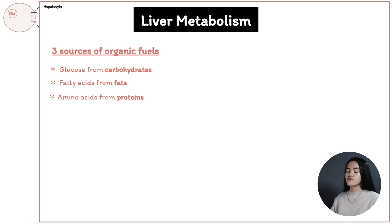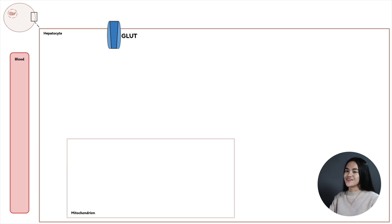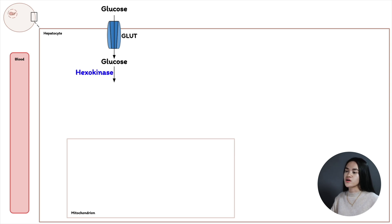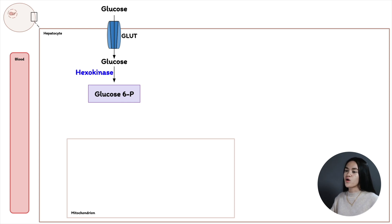Let's start with sugars or glucose. Glucose enters hepatocytes via a glucose transporter called GLUT2, and it's going to be phosphorylated by hexokinase 4, or glucokinase, forming glucose-6-phosphate. We've added that phosphate group onto that 6-carbon, and the reason we've phosphorylated glucose is so that it can't leave the cell, because the membrane doesn't have a transporter for phosphorylated sugars.